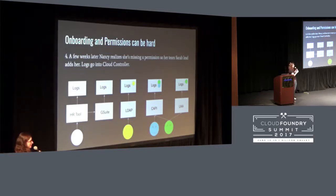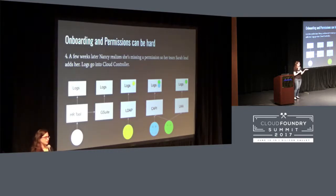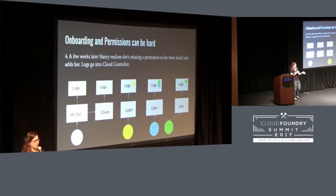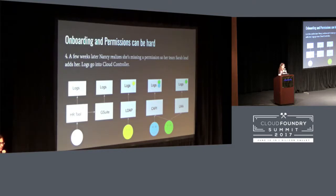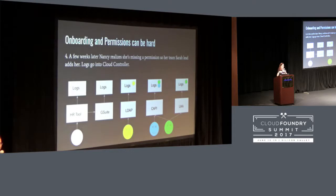But those documents are never complete. A few weeks later, Nancy is going to find something that was left out. At that point she'll probably go to her team lead, who can give her access directly through CAPI to whatever spaces or orgs she was missing. And these logs continue to be scattered across the disparate systems — the logs that went into CAPI are only there, and the team lead's actions might need to go into both systems.